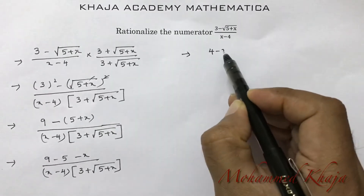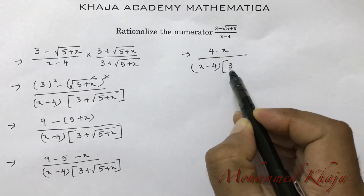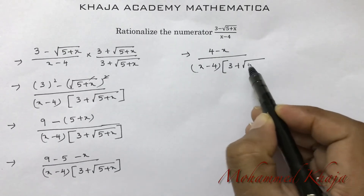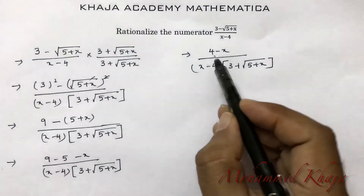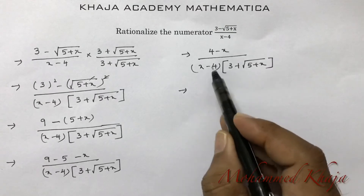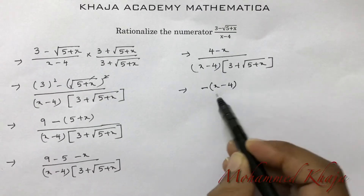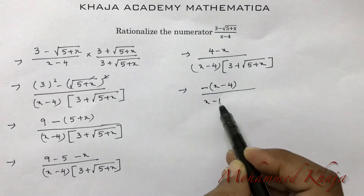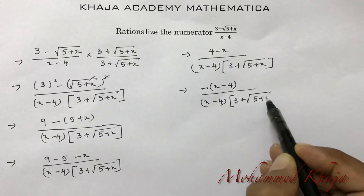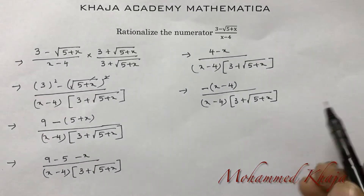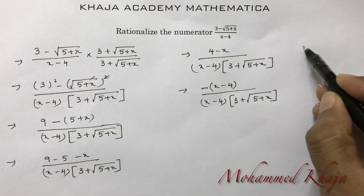Continuing simplification: 9 minus 5 is 4, so we have 4 minus x in the numerator, over x minus 4 into 3 plus root(5+x). Some students may have doubts about how we proceed from here — specifically, how to handle the 4 minus x in the numerator.